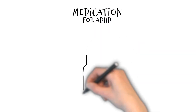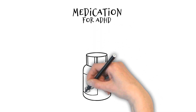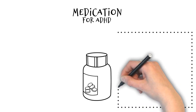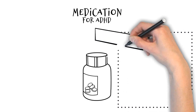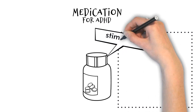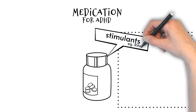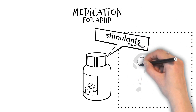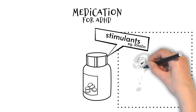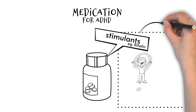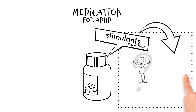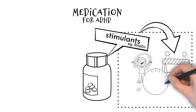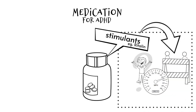Treatment for ADHD is often a combination of talking therapies and medication. The most common type of medication used are stimulant medications such as Ritalin. It might seem strange that stimulants can help reduce hyperactivity and impulsivity. However, they work by stimulating the brain's braking system, and by doing so, this helps children to control their attention and behaviour.